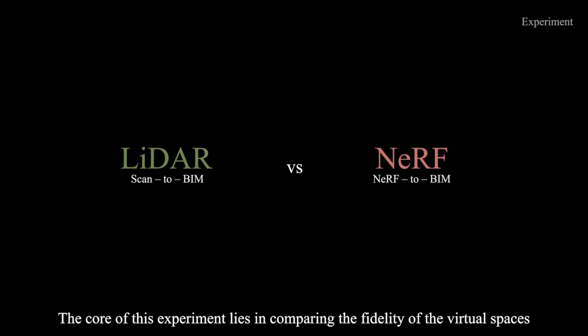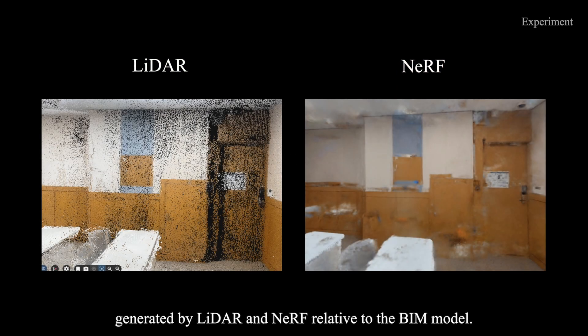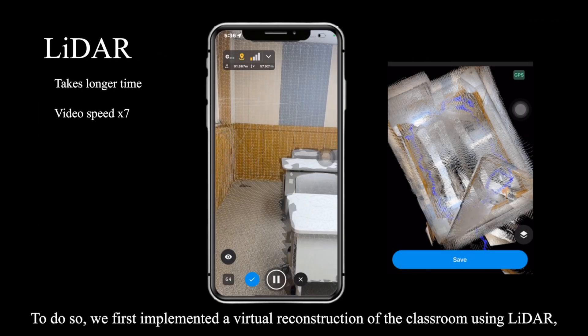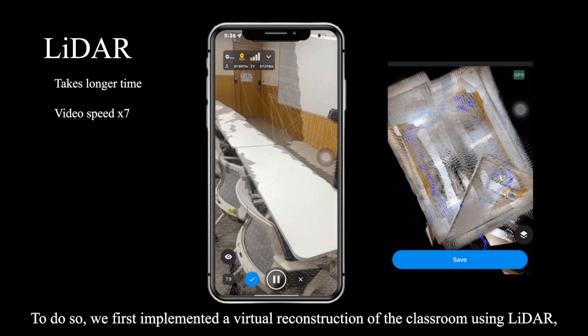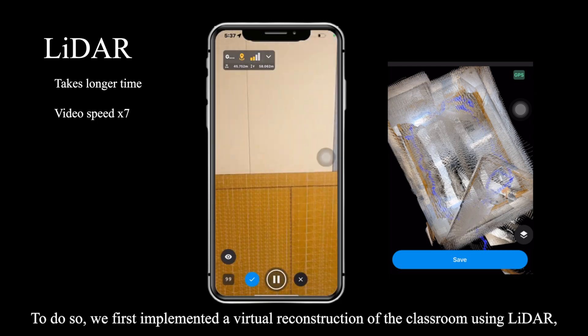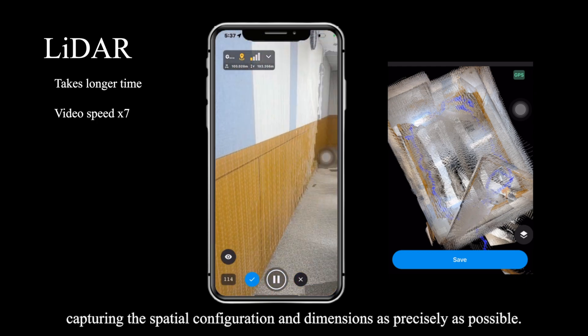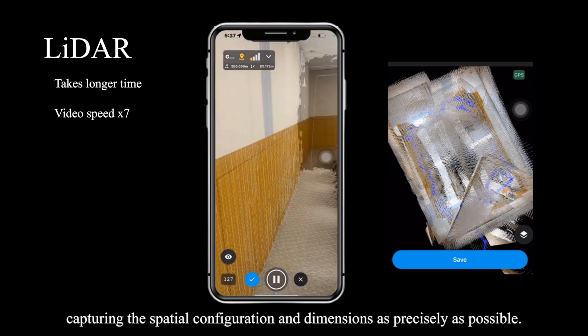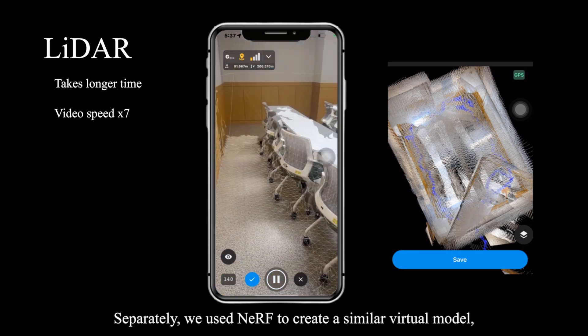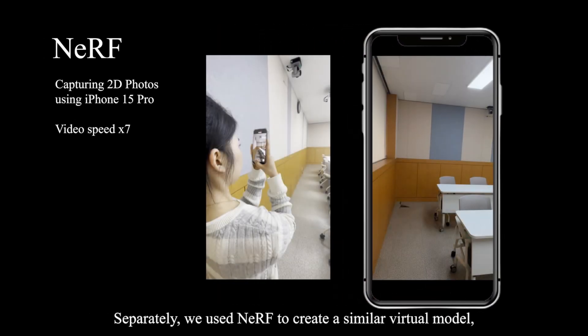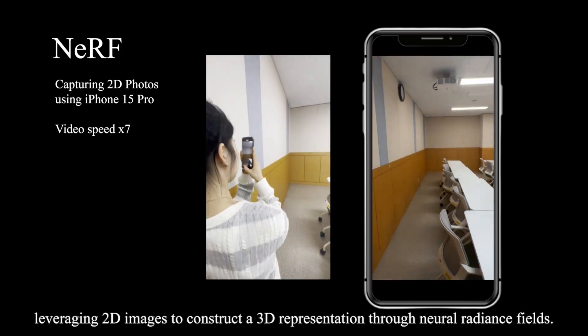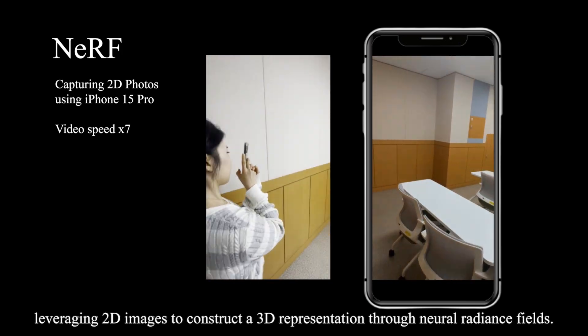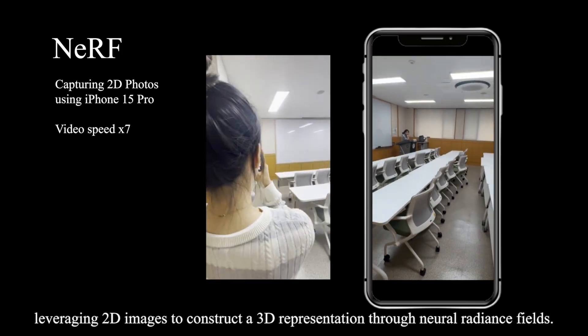The core of this experiment lies in comparing the fidelity of the virtual spaces generated by LIDAR and Nerf, relative to the BIM model. To do so, we first implemented a virtual reconstruction of the classroom using LIDAR, capturing the spatial configuration and dimensions as precisely as possible. Separately, we use Nerf to create a similar virtual model, leveraging 2D images to construct a 3D representation through neural radiance fields.